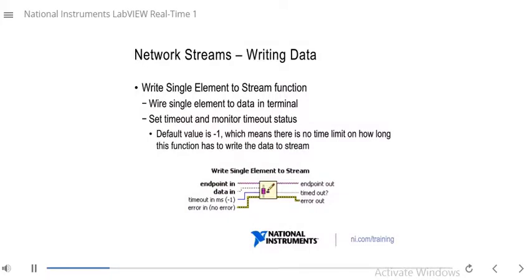Let's look at the writer endpoint. To write data to your network stream, you can use the write single element to stream function, wiring data into the data in input. The data type must match what was associated with the writer endpoint when it was created. You can also set a timeout to control how long it waits for room in the network stream. The default timeout is negative one, meaning it waits indefinitely until a space is free. You can also monitor the timeout status on the right.